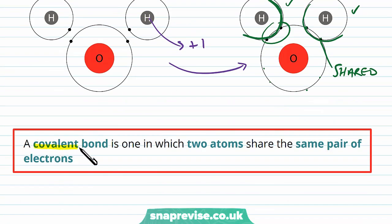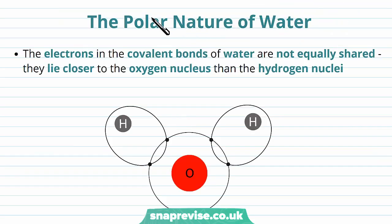By definition, a covalent bond is one in which two atoms share the same pair of electrons. You'll notice the pair is shared by the oxygen and the hydrogen. This covalent bond structure allows the water molecule to gain a property which describes it as being polar.